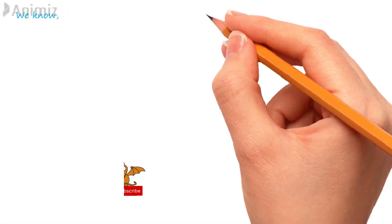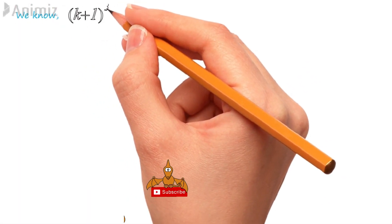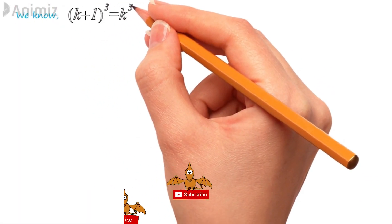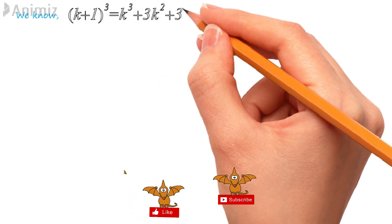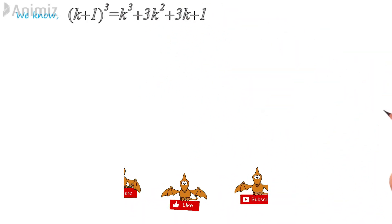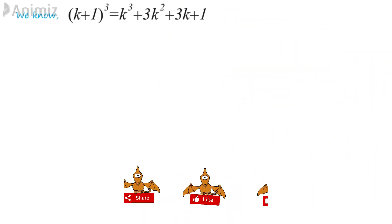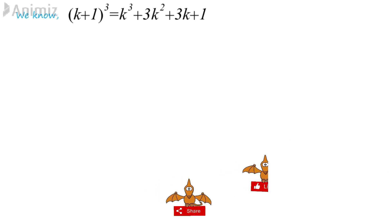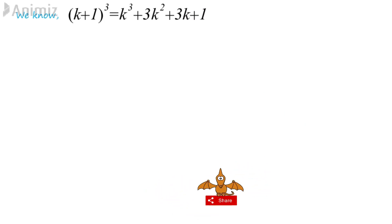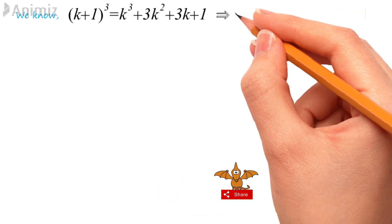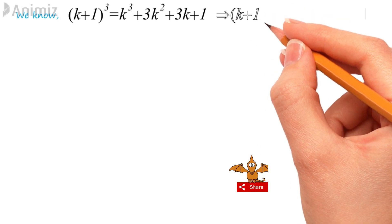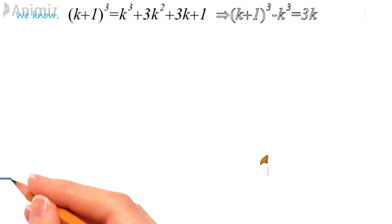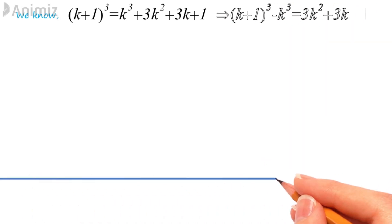Following the formula for A plus B whole cube, we get K plus 1 whole cube equals to K cube plus 3K square plus 3K plus 1. Now just take the K cube from the right side to the left side, which becomes K plus 1 whole cube minus K cube equals to 3K square plus 3K plus 1.